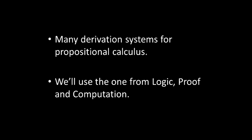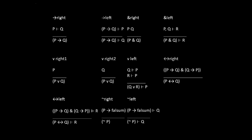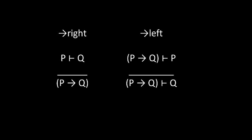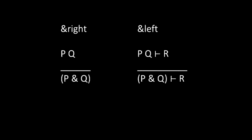There are many derivation systems for propositional calculus. We will use the one from logic proof and computation, which we call LPC. First, the left-right rules for the logical connectives. These are fairly straightforward. The rule of implies right says we can prove P implies Q by assuming P and proving for Q. The rule of implies left says that P implies Q is an assumption and proving for Q. Then we could do so by proving P. The and-left and and-right rules split a conjunction into its component parts.